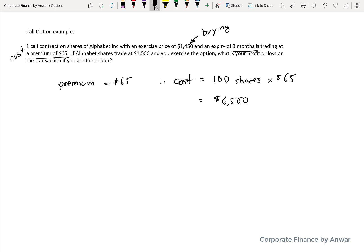If you exercise the option, you would be allowed to buy them at $1,450 and you are going to theoretically sell them on the marketplace at $1,500. So therefore the profit from exercising is equal to the $1,500 that you're going to sell the shares for minus the $1,450 which is the exercise price.